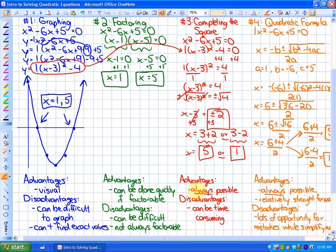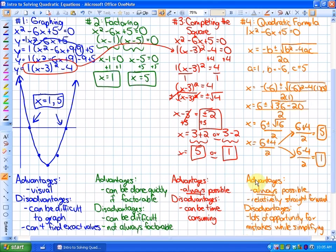Completing the square. The advantages are that it is always possible to solve by completing the square. The disadvantages are that it can be time-consuming and a little bit difficult. As far as the quadratic formula is concerned, the advantages of solving using the quadratic formula is, again, that it's always possible. Also, that it's relatively straightforward. You're substituting values into a formula. The disadvantage is that there are lots of opportunities for making mistakes while you're simplifying, and we'll see that later on.